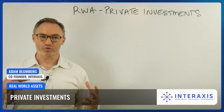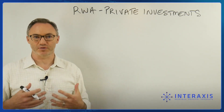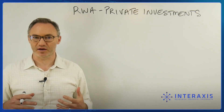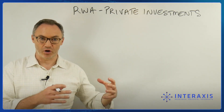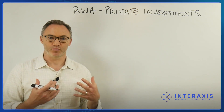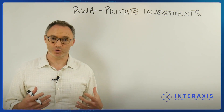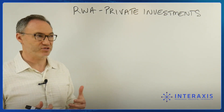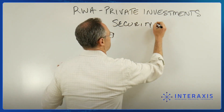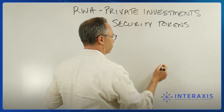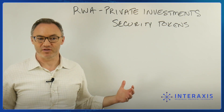We talked before about bringing real-world assets, or assets that are more traditional — things like real estate, private investments, even credit — where we interact not on-chain, but where we decide we're going to have an agreement and bring that from off-chain onto a public blockchain. That's what we're doing here with private investments, and you'll often see something like security tokens, which I think are going to be extremely important. So first, we have to step back and ask: why do we even need something like this?